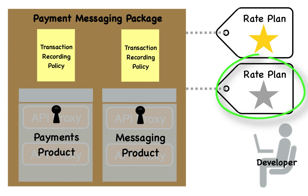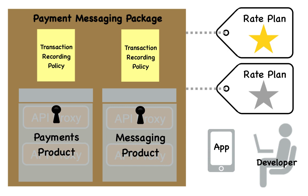Developers can now sign up for the rate plans that give their apps the right amount of access to the products they need. And there you have it — a quick overview of the artifacts you'll need to create to monetize your APIs. Create your proxies, resources, and products. Then register your developers and their apps. Apply transaction recording policies to your products, and then package up your products and define your API business model using rate plans.